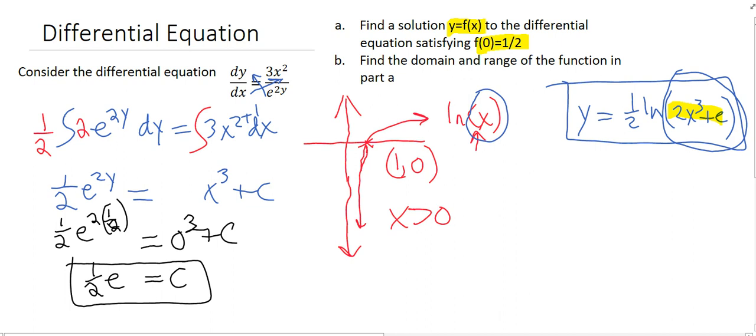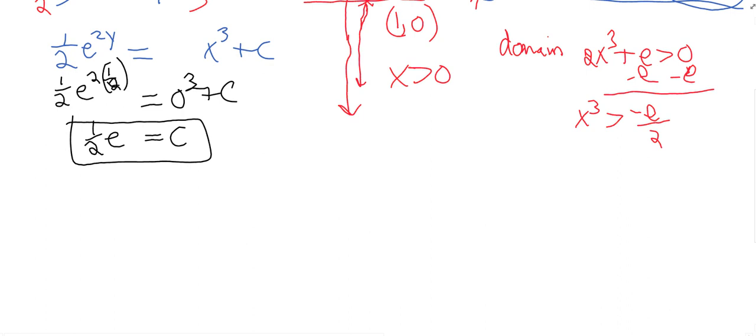So that's it. Let's see here. We're doing this in red, I suppose. So the domain is going to be where 2x³ plus e is greater than 0. And so we just subtract e, it's a horrible e, and then we'll divide by 2, we get x³ is got to be greater than -e/2. And then we're going to take the cube root of both sides, and x has got to be greater than the cube root of -e/2.